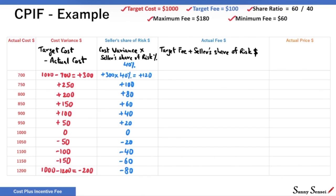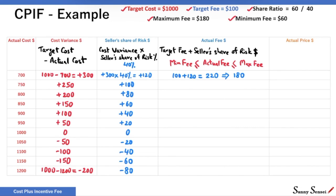But we have a constraint on actual fee — it cannot be more than the maximum fee and cannot be less than the minimum fee. For the actual cost of $700, seller's share of risk is $120 and target fee is $100, so actual fee is calculated as $100 plus $120, or $220. This is not meeting the constraint — $220 is more than the maximum fee of $180. So we revise the actual fee to $180, the maximum allowed value. For actual cost of $1,000, the calculated value of actual fee is $100, which is within the constraints. For actual cost of $1,200, the calculated value is $20, which is less than the minimum fee of $60, so we revise the value to $60.